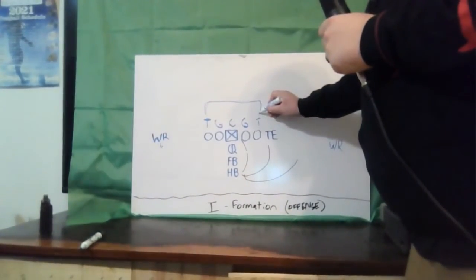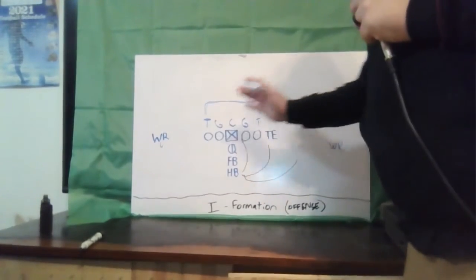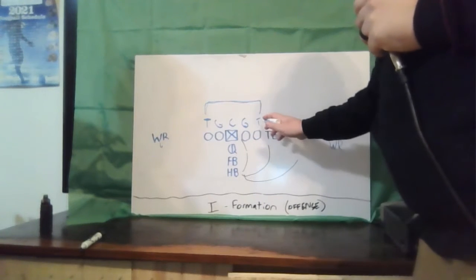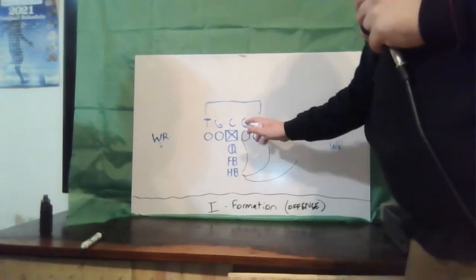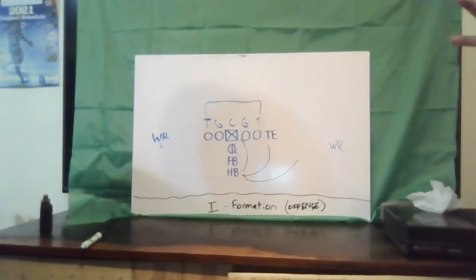So, basically, you see where I've drawn this big bracket right here? We call that the tackle box. Going from right to left, you'll notice that there are duplicates here. You've got your tackle, your guard, your center, your guard, and your tackle. And, together, they form what they call the tackle box.